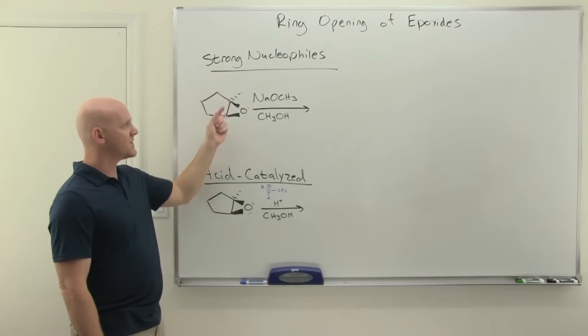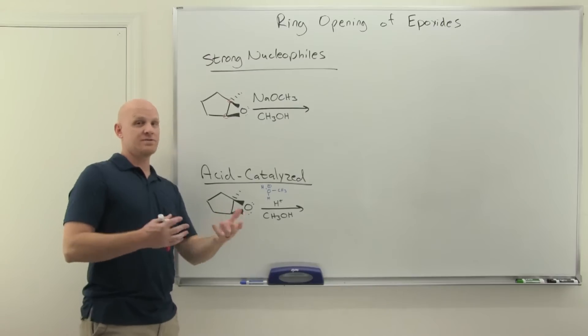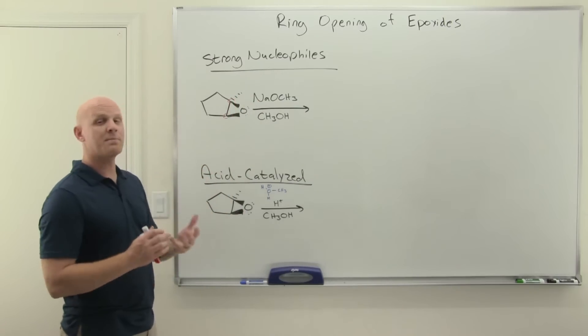Epoxides, due to ring strain, are much more reactive than all the other ethers, which I guess I shouldn't call them all the other ethers because we don't really consider this an ether. It gets its own class of functional group. It's an epoxide.